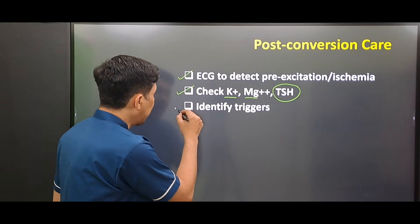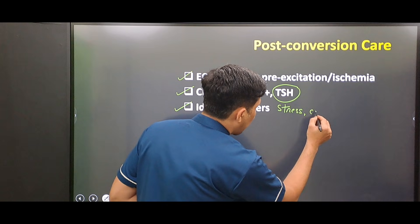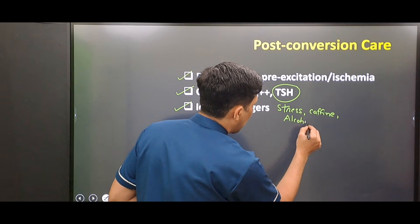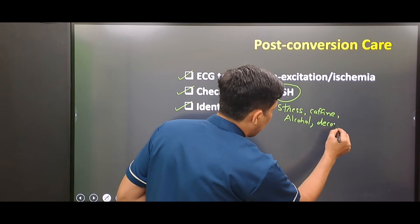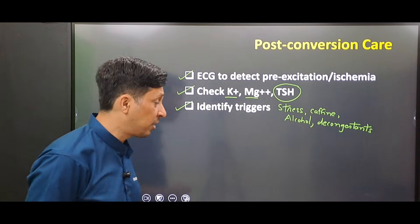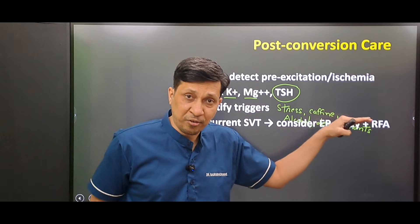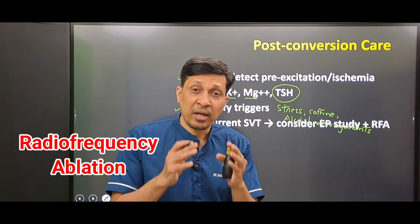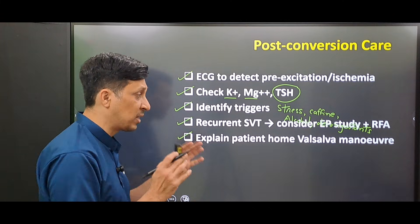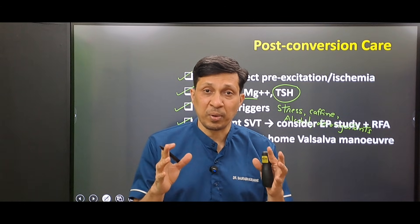Then you will identify triggers such as stress, caffeine, alcohol, or use of certain decongestants. If the patient is having recurrent SVT, you will refer for electrophysiological studies so the patient can undergo radiofrequency ablation. You will also teach the patient home Valsalva maneuvers so they can try to control SVT at home.